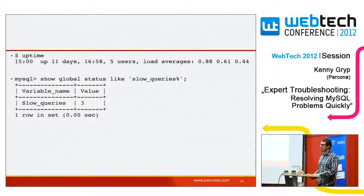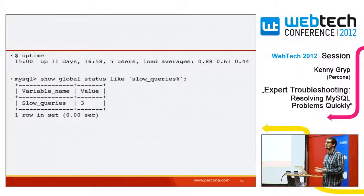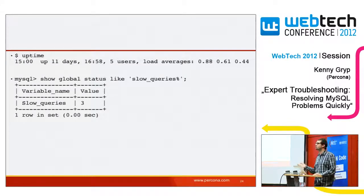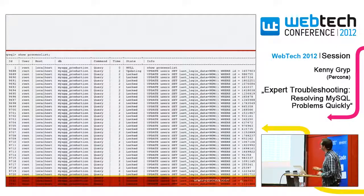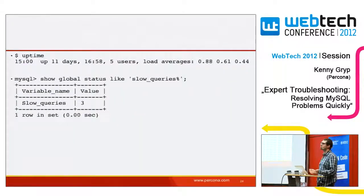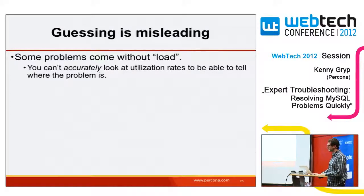The next thing we can do is look at slow queries. The slow query log is a log in MySQL that writes all queries taking longer than a certain amount of time. If a query takes longer than one second, it'll be written to the slow query log, provided you set long_query_time to one. An interesting thing: the time a query was locked does not count toward long_query_time. So even though queries take a long time, they may not be logged.